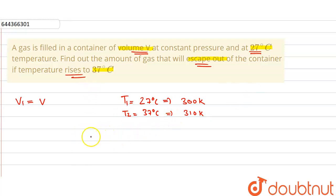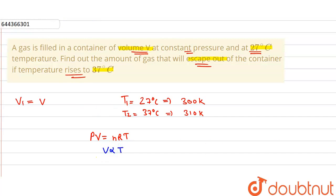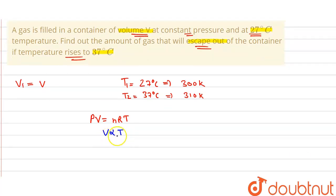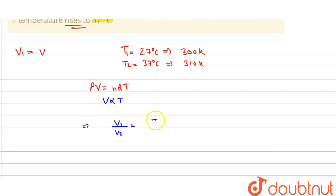Now we know that from the ideal gas equation, we can write PV = nRT. Here nR is constant and pressure is also constant. So we can write that volume V is directly proportional to T, and therefore V1 upon V2 is equal to T1 upon T2.